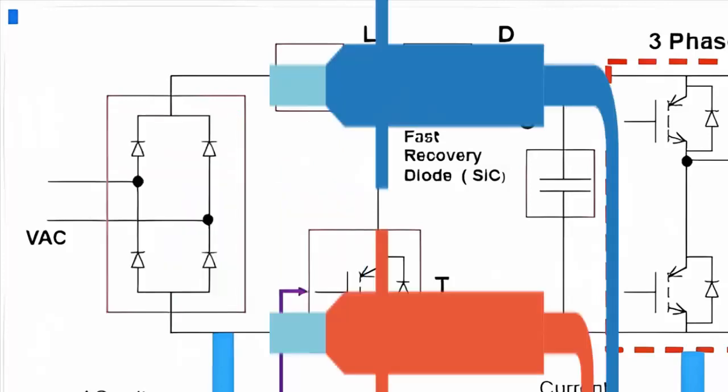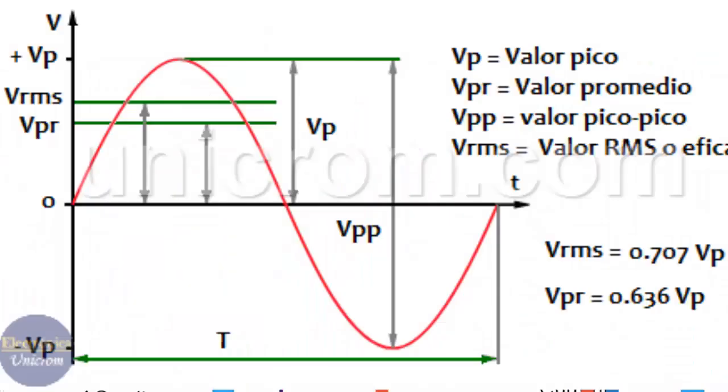After the diode bridge, the current becomes continuous and experiences a slight increase in voltage.